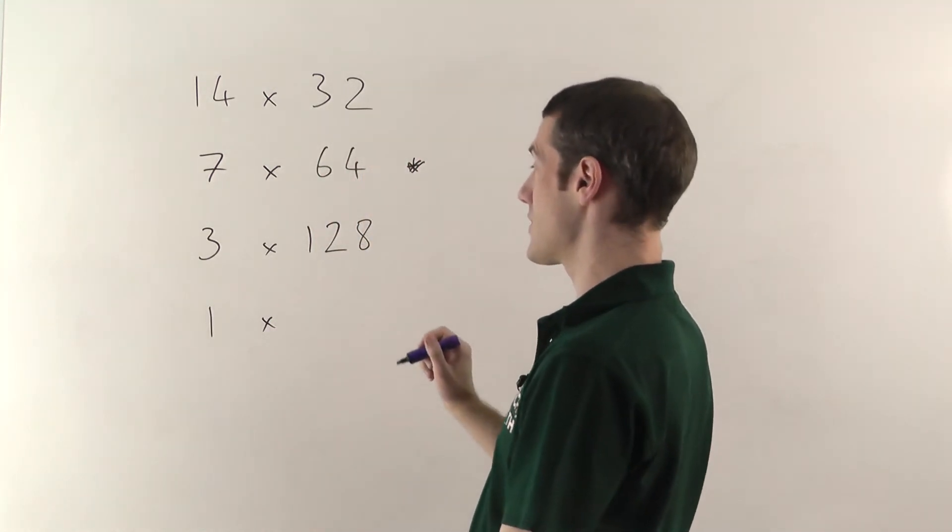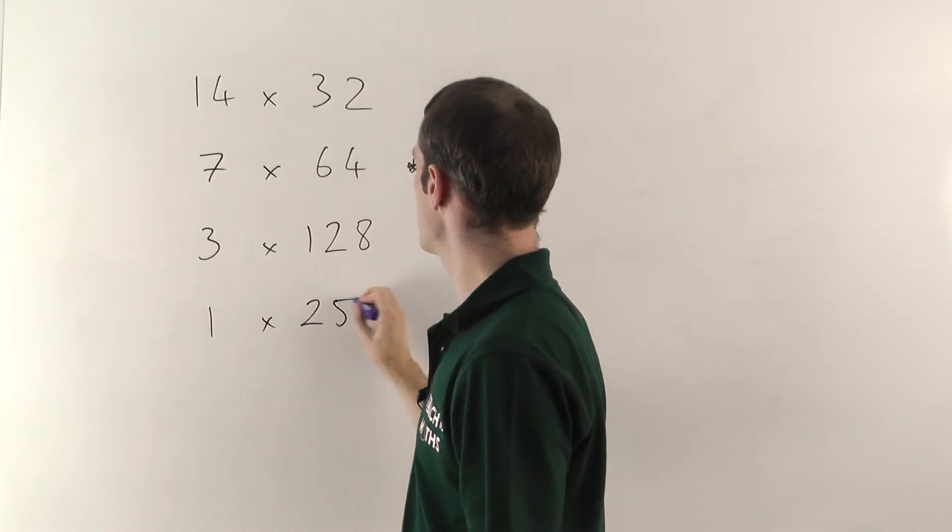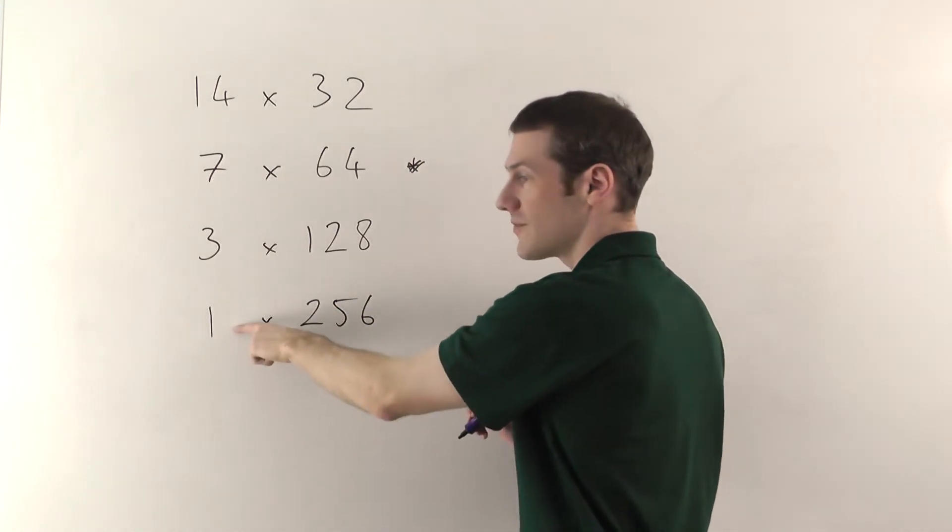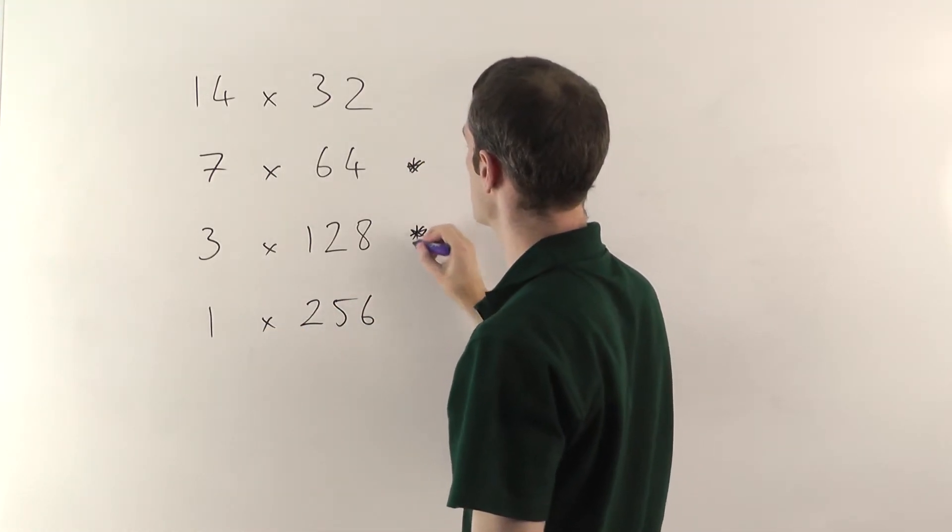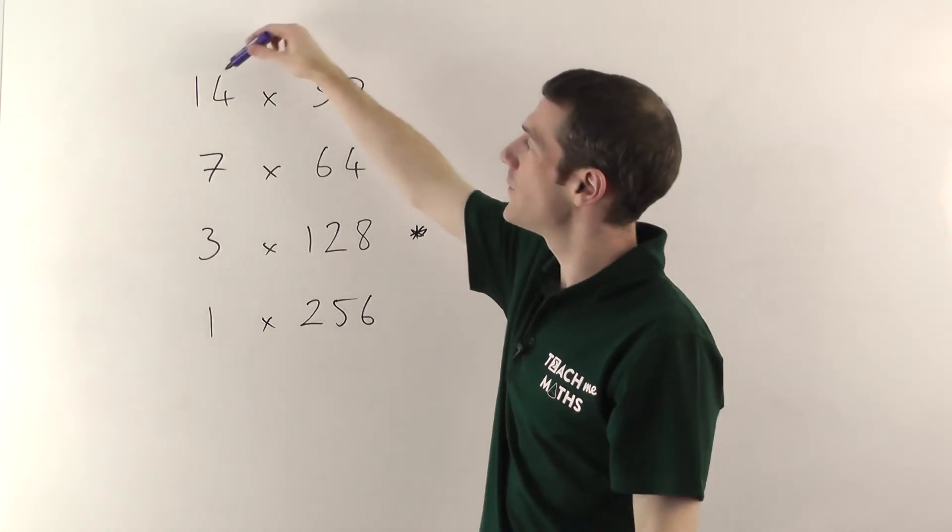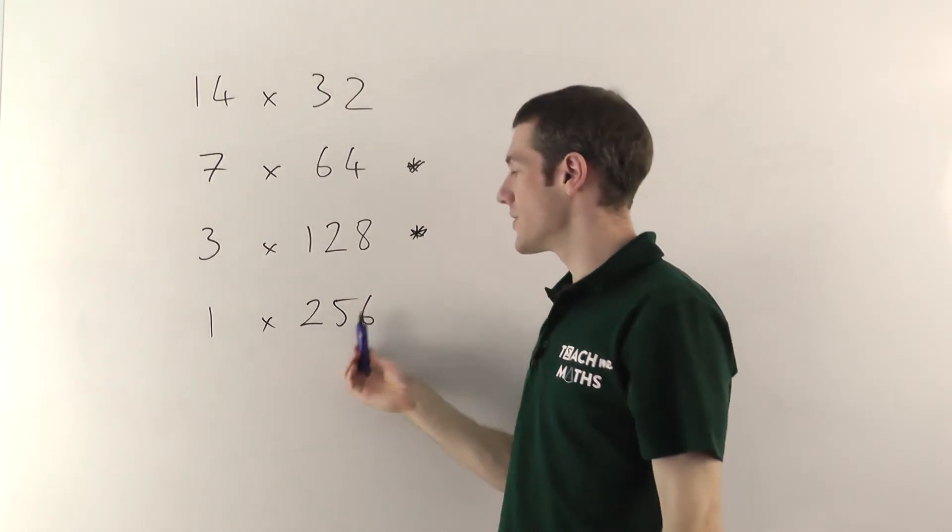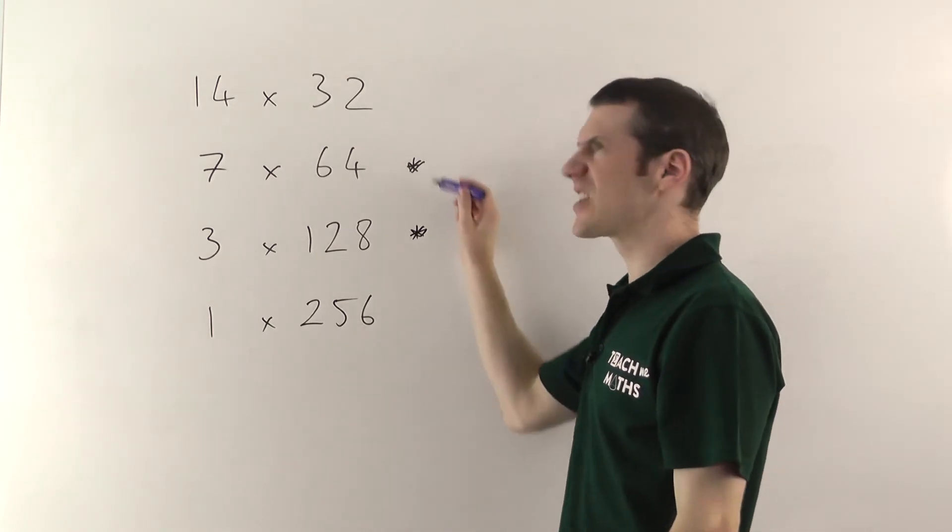Double 128, you get 256. Again, we had to round down here, so you put another asterisk. But effectively what we've managed to do is turn the 14 times 32 into 1 times 256. Kind of.